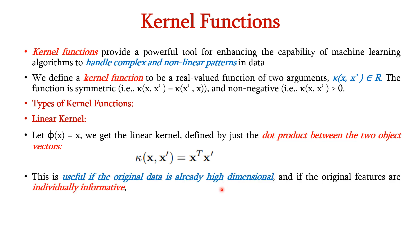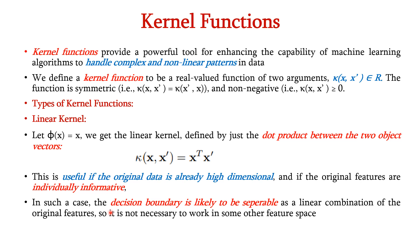The linear kernel is useful if the original data is already in high dimension and if the original features are individually informative. In this case, the decision boundary will already be clearly separable as a linear combination of the original features. So it is not necessary for this kernel to work in some other higher dimensional feature space. When the number of features is high, we can go for the linear kernel.